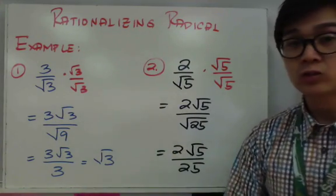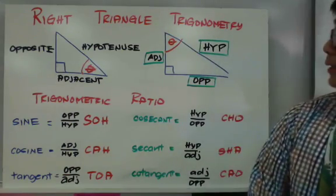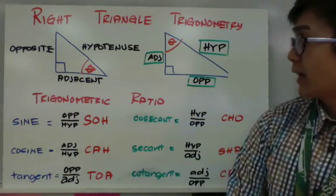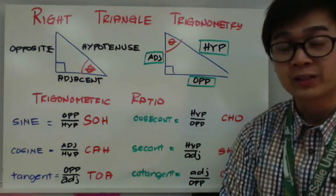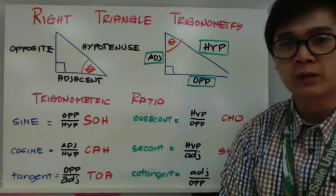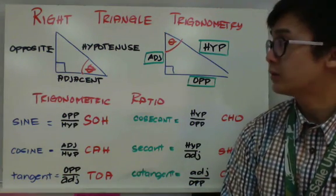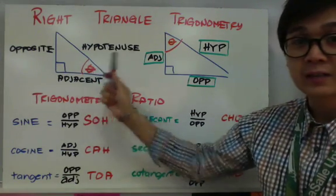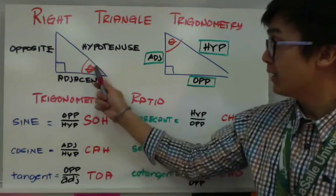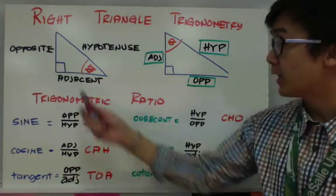Kailangan nyo ito para makapagsagot ng mga problems involving trigonometry. Now, meron tayo ditong right triangle at isa sa mga popular na formula or mnemonic device sa trigonometry is yung SOHCAHTOA. Pero ano nga ba yung SOHCAHTOA at bakit natin kailangan malaman yung SOHCAHTOA? Yung SOHCAHTOA nanggaling yan sa right triangle — sa hypotenuse, opposite side, and adjacent side. Ito yung triangle natin at ito yung reference angle natin. Importante na alam nyo yung reference angle at alam nyo kung anong angle yung tinitinan nyo sa bawat problems sa trigonometry.